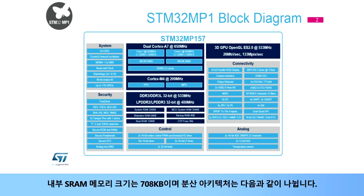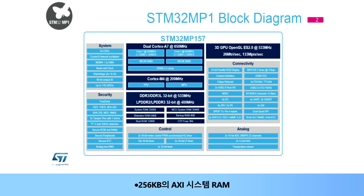The internal SRAM memory size is 708 kilobytes, with a scattered architecture split into 256 kilobytes of AXI system RAM, plus 384 kilobytes of AHB-MCU subsystem RAM.